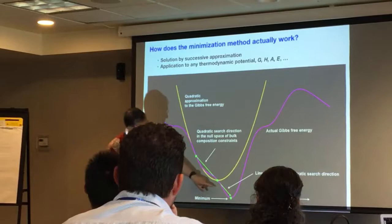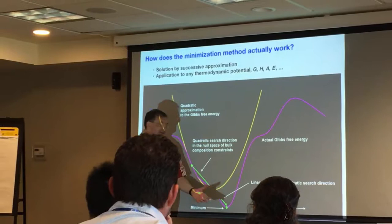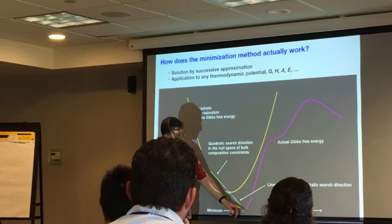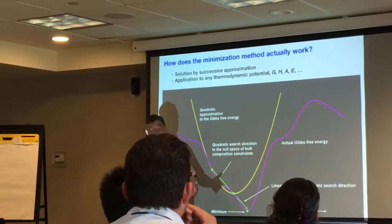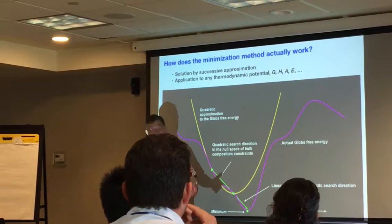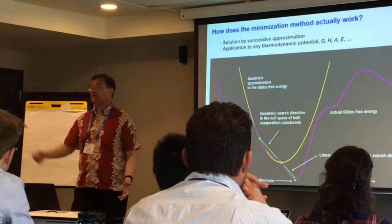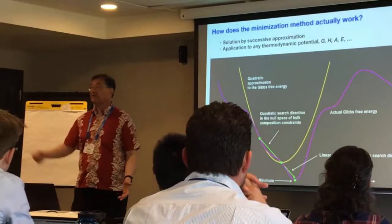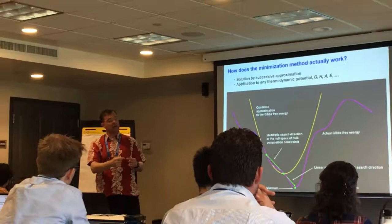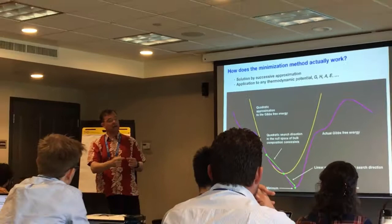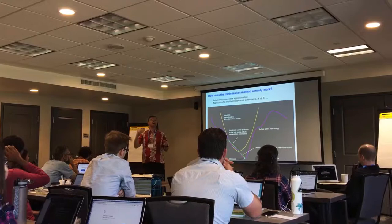In this case, it's where that arrow would intersect the purple surface, which is awfully close to the true minimum. Then the algorithm repeats: it forms the quadratic approximation at the projection point, and in this particular case the quadratic approximation would be virtually the original free energy curve, so it would go almost directly to the minimum. It keeps doing this until the difference between the quadratic minimum and the actual minimum is smaller than about 10 to the minus seven or 10 to the minus eight relative, which you can control in the algorithm.